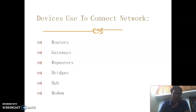The bridge is a two-port device having a single input and single output. It is used for interconnecting two networks working on the same protocol. A bridge is of two types: one is the transparent bridge and another one is the source routing bridge.